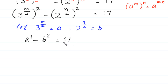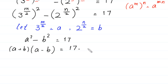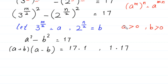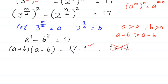We factorize both sides: a squared minus b squared equals a plus b times a minus b, equal to 17, which can be factorized as 17 times 1. Because we are looking for positive integers, a and b are greater than 0, so a plus b must be greater than a minus b. Therefore we reject the pair 1 times 17 and select only the pair 17 times 1.